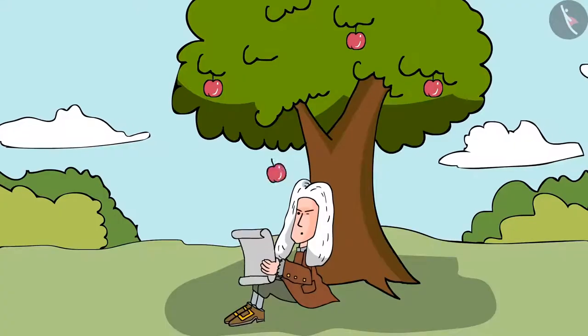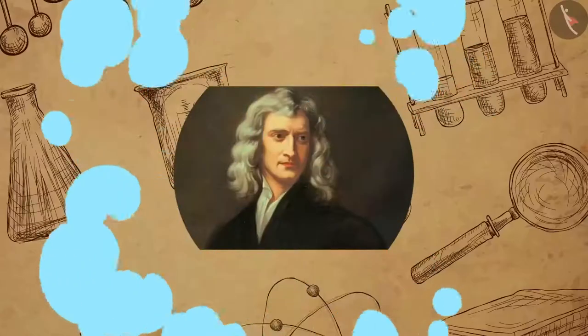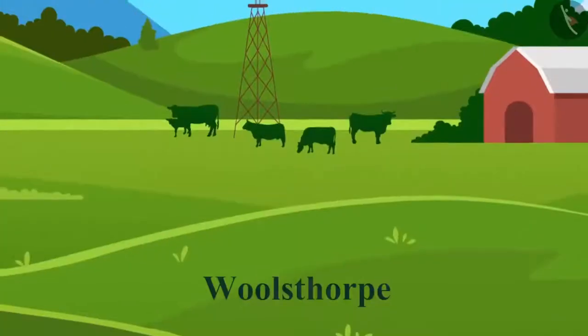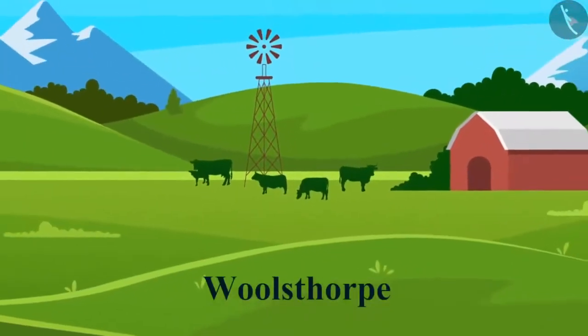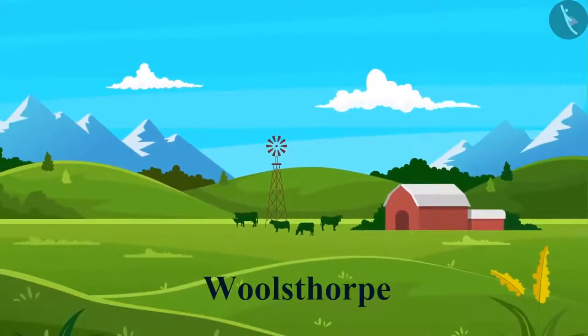Earlier, we learned how Isaac Newton discovered the laws of gravity. Let's now know a bit more about him. Sir Isaac Newton was born in Woolsthorpe near Grantham, England. He was born in a poor farming family, but he was not very good at farming.